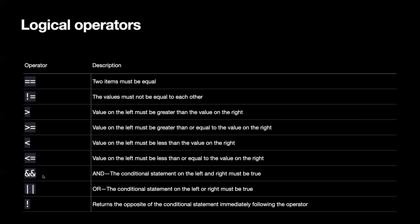When combining conditions with and, both conditions must be true for the result to be true. With or, only one of the two conditions needs to be true for the result to be true. The not operator inverts the condition: if the condition is true and you say not, it becomes false; if it's false and you say not, the result is true.